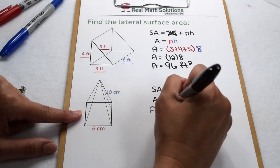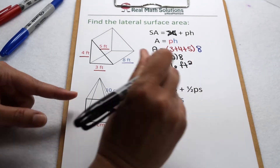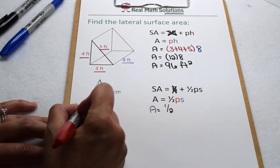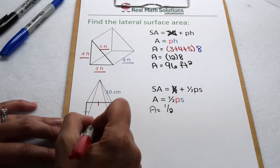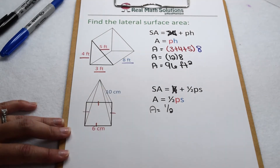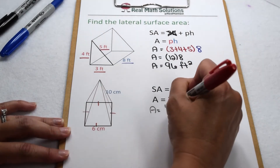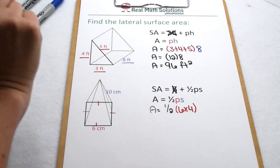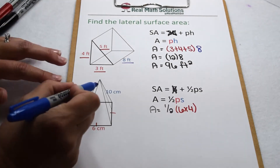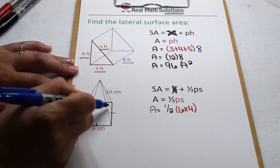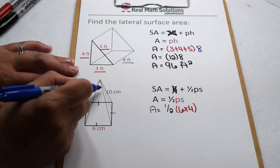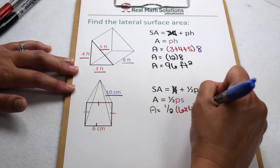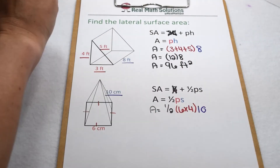To solve that, we need to start by finding the perimeter of the base. Since our base is a regular polygon, all of our edges are going to be the same length. So the perimeter can be thought of as 6 times 4. Then we need to multiply that by the slant height — the height of one of the lateral faces, not the height of the prism — so we multiply by 10.